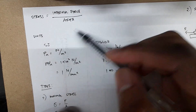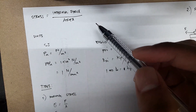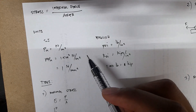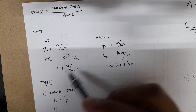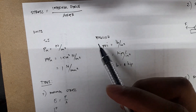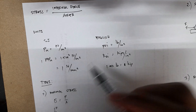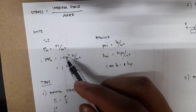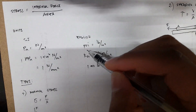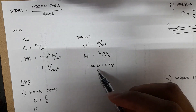The units we usually use to describe stress are Pascals. Pascals are just Newtons per square meter, and you also encounter megapascals, which is 1×10⁶ Newtons per square meter. For smaller dimensions like diameters of wires or rods, it's more convenient to express megapascals in terms of millimeters — 1 megapascal is equivalent to 1 Newton per square millimeter. In English units, we have PSI (pounds per square inch) and KSI (kips per square inch), where 1,000 pounds equals 1 kip.